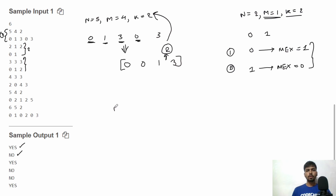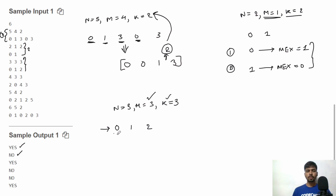Test case 3: N=3, M=3, K=3, array is [0, 1, 2]. We must select all three elements. Since 0, 1, and 2 are all present, the smallest non-negative integer not present is 3. So MEX equals 3, which matches K=3. Output is YES.